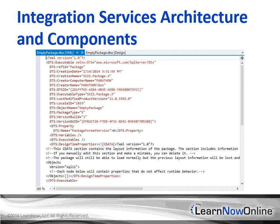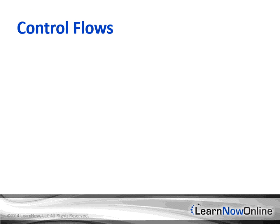It's always good to have a basic understanding of the underlying plumbing behind a technology, and Microsoft documents the structure of this XML well. A typical Integration Services package consists of a control flow, some number of data flows, connection managers, and configuration elements. Each part of the package is critical to the overall functioning, and I'm going to briefly cover the most important ones. In upcoming sections you'll learn much more about each of these components throughout this course. The first component is control flows.